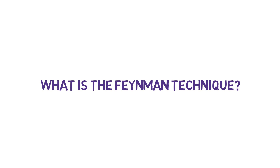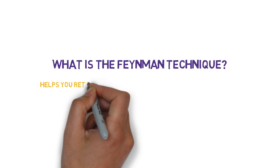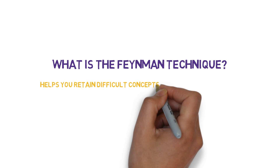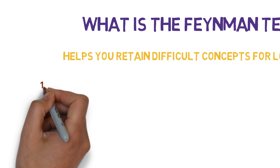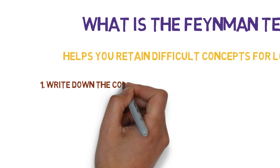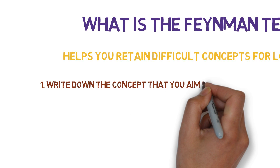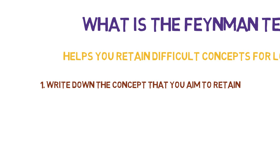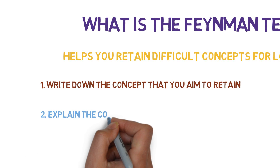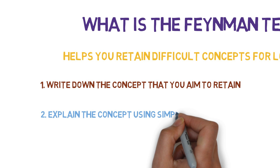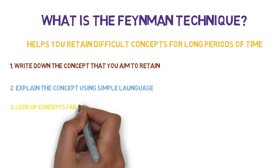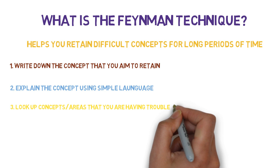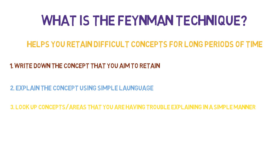So what is the Feynman technique? The Feynman technique will help you master difficult concepts in a way that you will retain them for long periods of time. There are four steps. First, write the concept name at the top — you are deliberately focusing your attention on mastering this one topic. Next, explain the concept using simple language as if you were explaining it to a friend who is not familiar with it. As you work on explaining the concept, you will naturally identify problem areas — areas that you are having difficulty explaining in simple terms. Use this as a guide to go back to your textbook or lecture materials to fill in the gaps in your understanding.